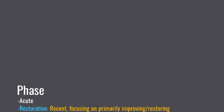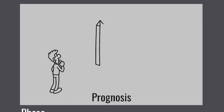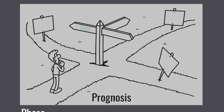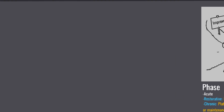Next, we look at the client's prognosis. Overall, if the prognosis is good, we'll focus mostly on improving. If it's poor, we'll focus more on compensating and adapting. But often clients have a fair prognosis, where we might use a mix of approaches.